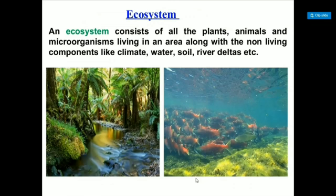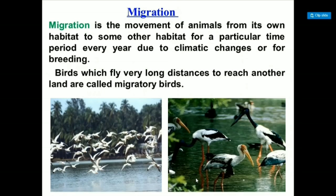Ecosystem means all types of plants, animals, and microorganisms living in an area, along with non-living components like climate, water, and soil. Migration means movement of animals from one place to another due to climatic changes. For example, the Siberian crane migrates from Siberia — where it is very cold — to India, flying a very long distance, and is called a migratory bird.